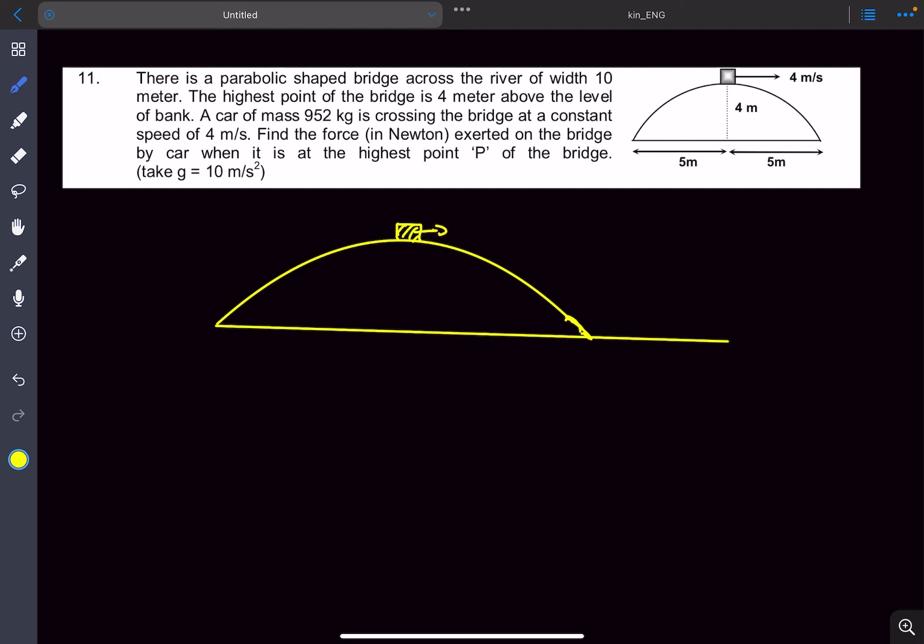At the highest point in the bridge, the car is moving with a velocity of 4 meters per second tangential to this path. If we draw the FBD of the car, there is the weight of the car mg acting downwards and normal from the ground, and the body is moving towards the right with a velocity of 4 meters per second.